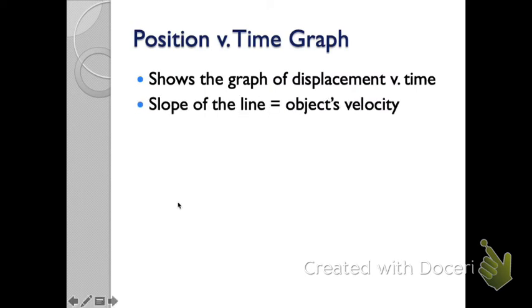When we talk about position versus time, we usually are referring to its displacement. How far is it from where it started? When we look at a position versus time graph, we're going to be able to measure the slope of the line and make that equal to the object's velocity.